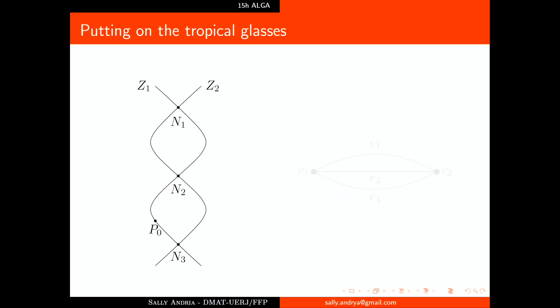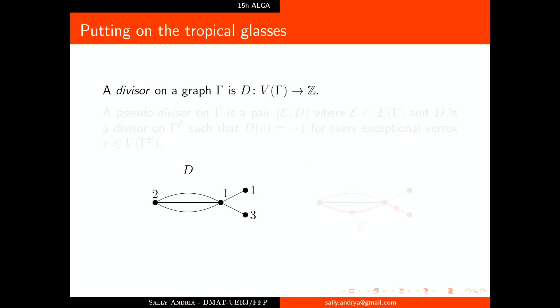Let's put on our tropical glasses and remember that you already saw this today. We can see a curve as a tropical curve. We can associate, in our example here, two components, three nodes—we can associate it to a graph. The two components will become vertices, and the node, the intersection of two components, will be the edge connecting the vertices associated to the components. If we have some smooth point in some components, this point can be seen in the vertex.